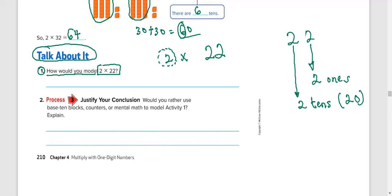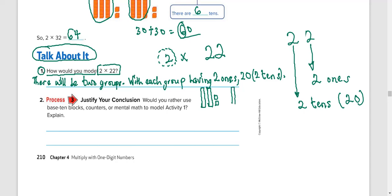So we're going to have 2 groups. In each group, with each group having 2 1's and 20 or 2 10's. So that's how we're going to model it. Something like this. 10, 20. And 2 1's. 1, 2. 2 groups. Another group. 10, 20. With 2 1's. 1, 2. Finish.